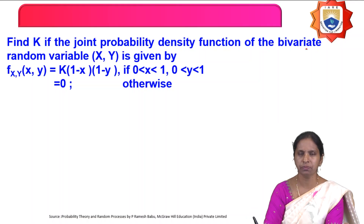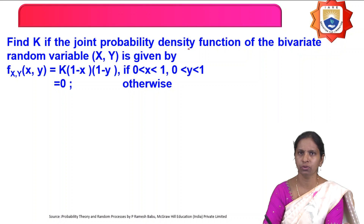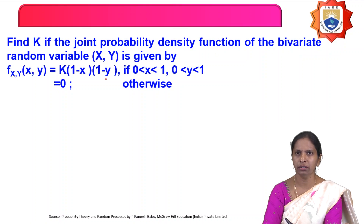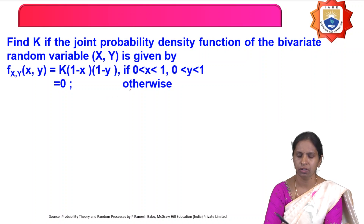The first problem is: find the value of k for the joint probability density function of the bivariate random variable x, y given by f(x,y) = k(1−x)(1−y) if 0 < x < 1 and 0 < y < 1, and 0 otherwise.